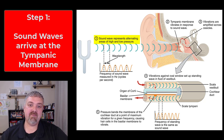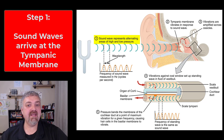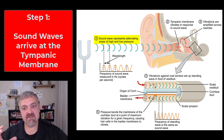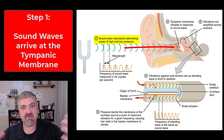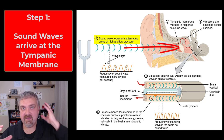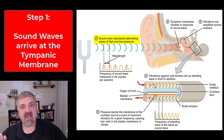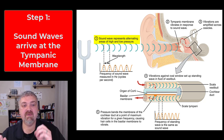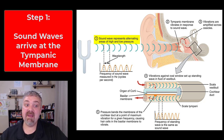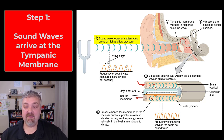Step one: sound waves represent alternating areas of high and low pressure. These pressure waves enter the ear and are directed towards the ear canal by the auricle or pinna of our external ear. Those sound waves travel through our ear canal, our external acoustic canal, until they reach the tympanic membrane or the eardrum.